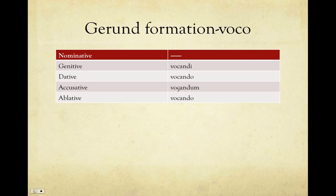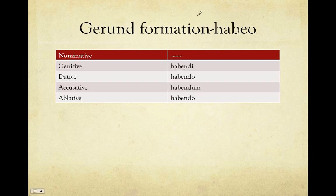Let's take a look at this with particular conjugations. Voco is first conjugation, so we're going to add those endings onto the stem 'voca': vocandi, vocando, vocandum, vocando. Second conjugation, like habeo, we take our stem 'habe' and add our '-ndi': habendi, habendo, habendum, habendo.